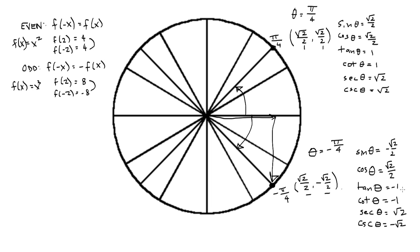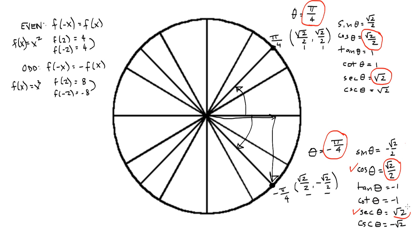So the question is, which trig functions, when I put in the negative angle, do I get the same answer as with my positive angle? Those are my even functions. Cosine and its reciprocal secant — those are the only two where the answer we get back is the same whether it's a positive angle or a negative angle. So my even functions are cosine and secant.